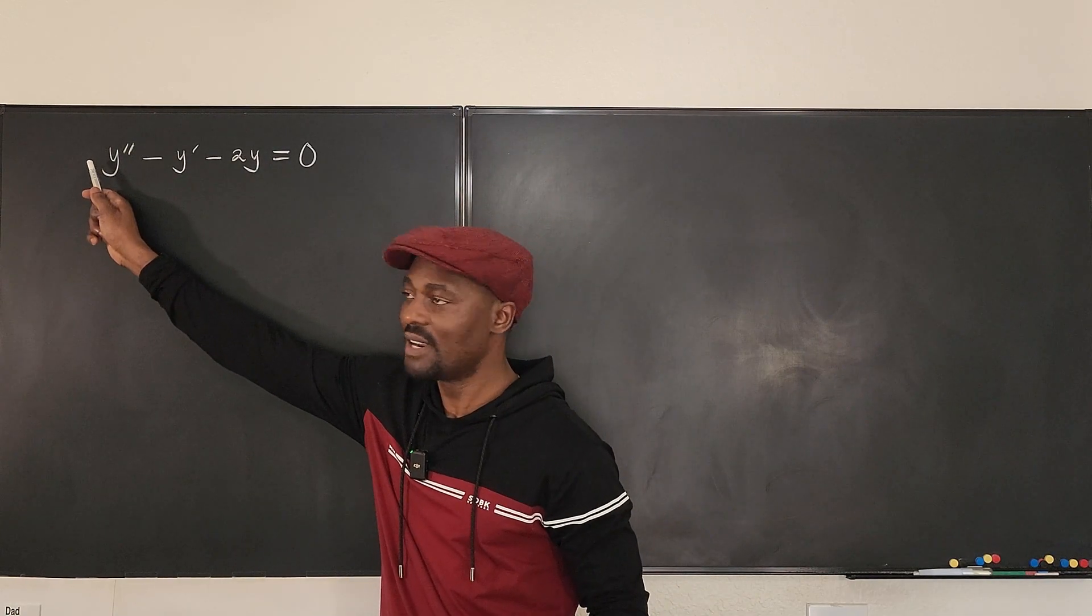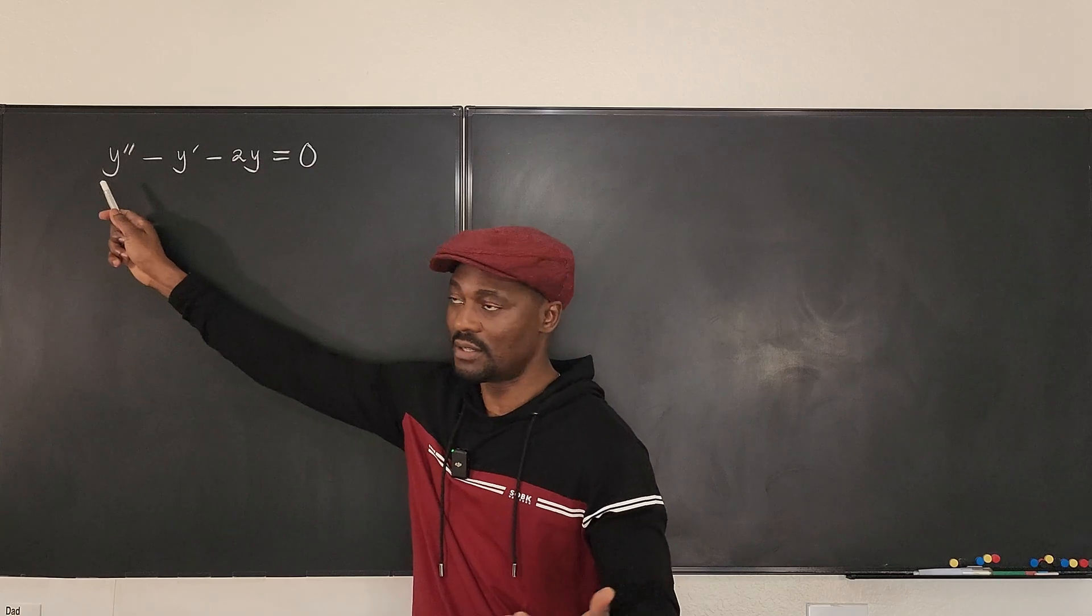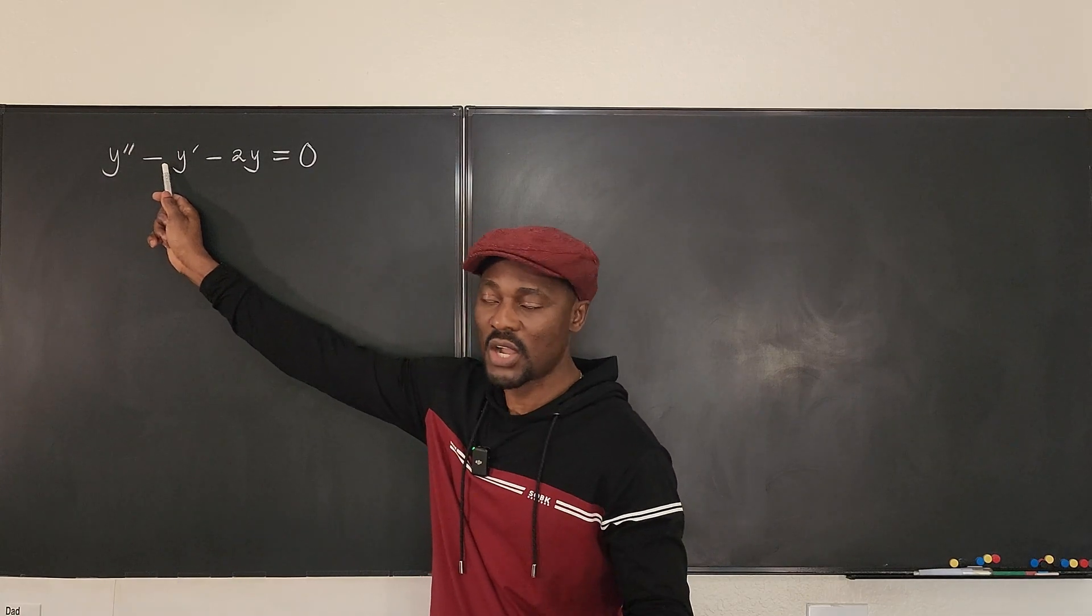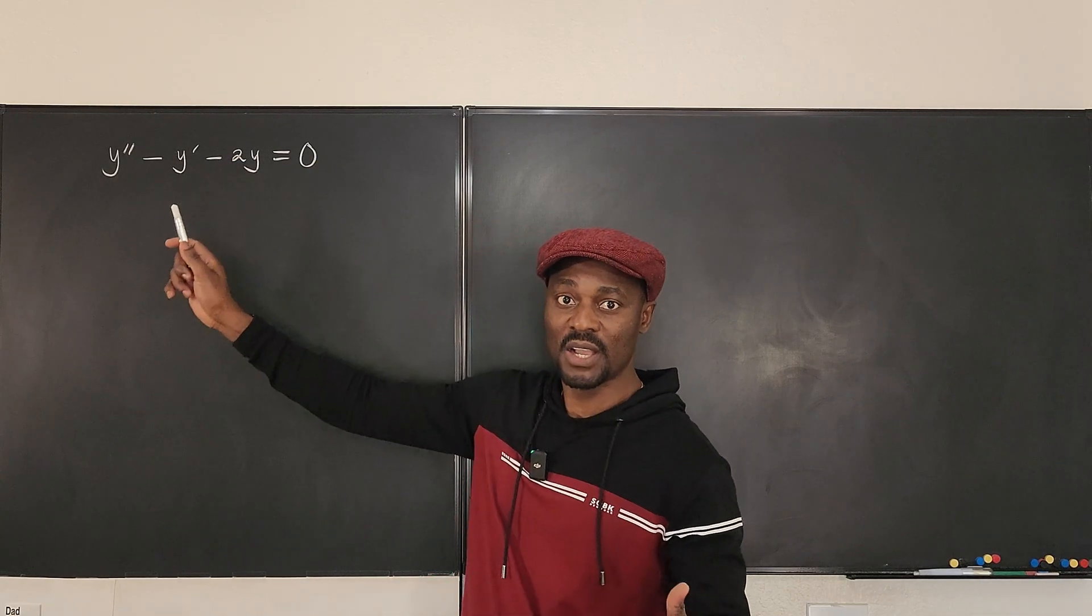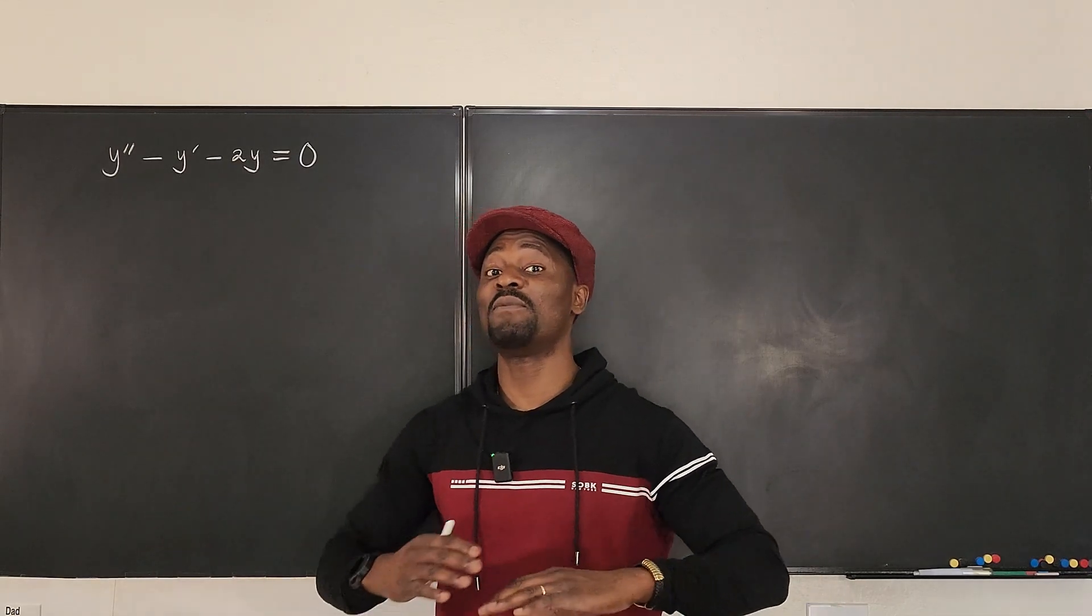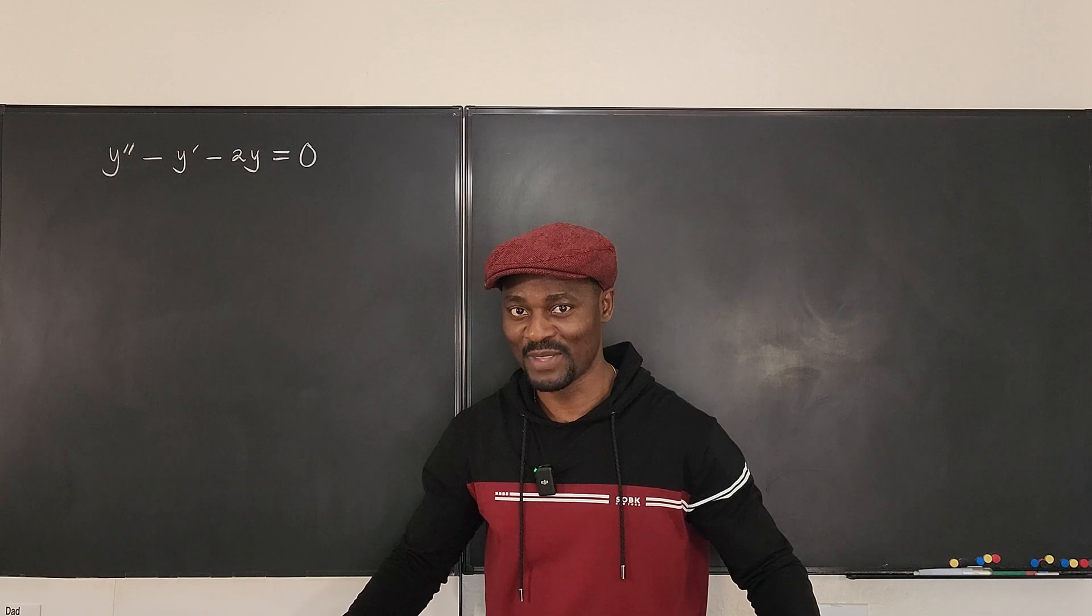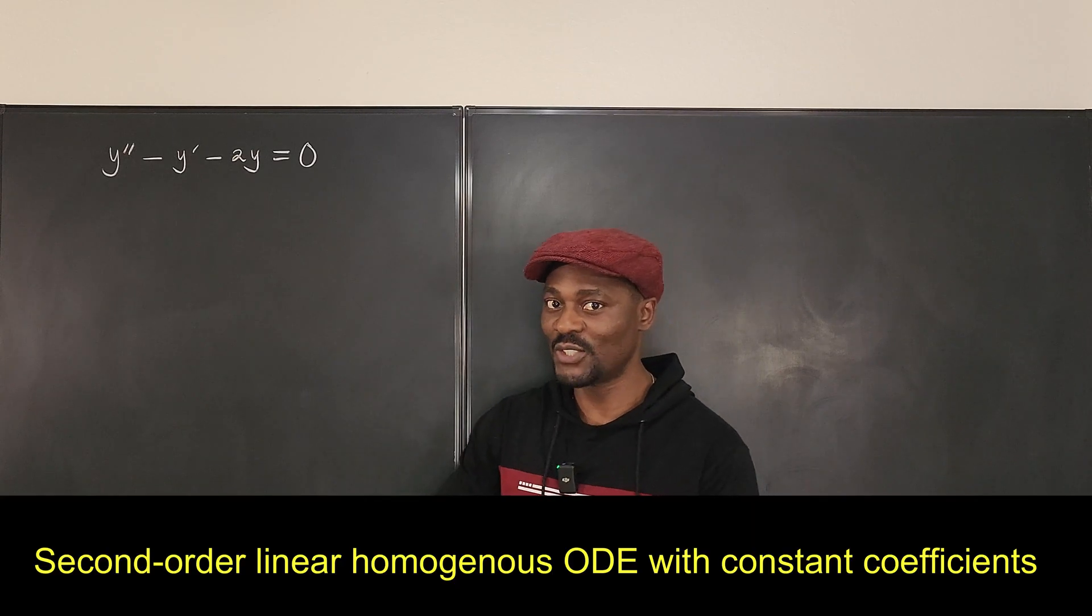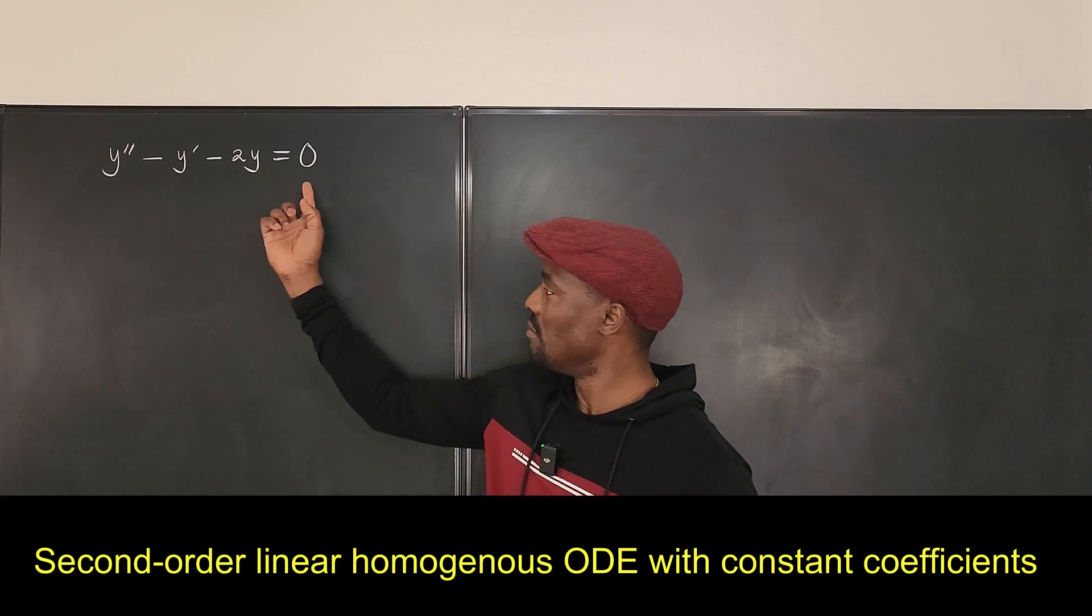You look at the coefficients here: here it is 1, it's a constant; here it is minus 1, it's a constant; here it is minus 2, it's a constant. When you have constants, you have to recognize it because it makes your life a lot easier when you're solving. So this is a second-order, linear, homogeneous.